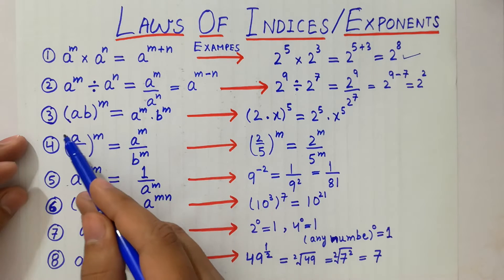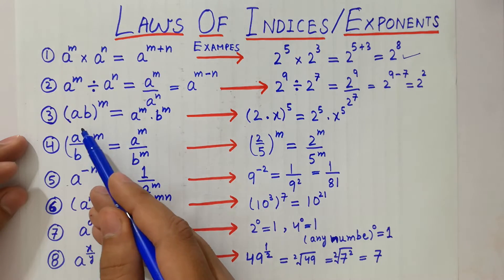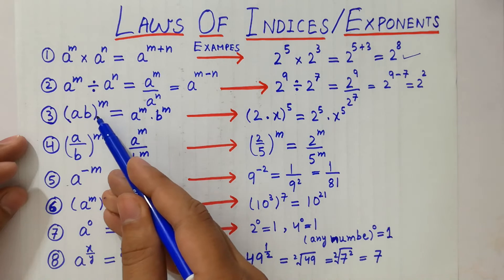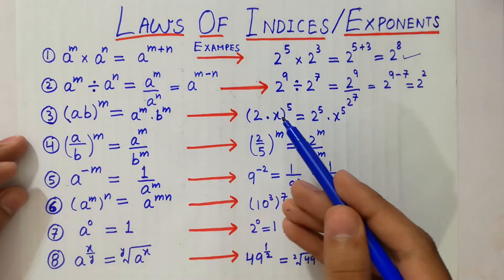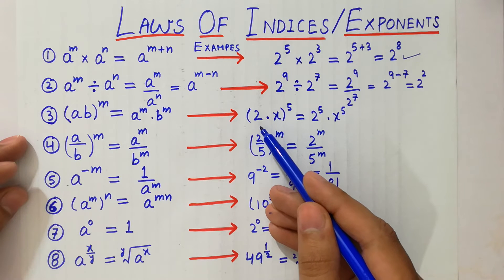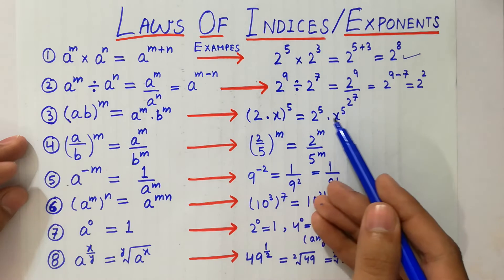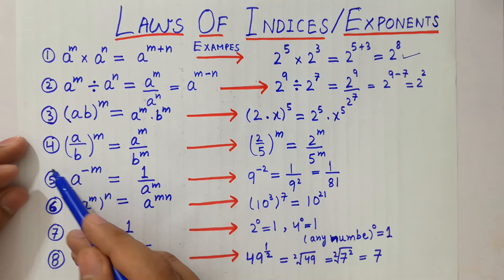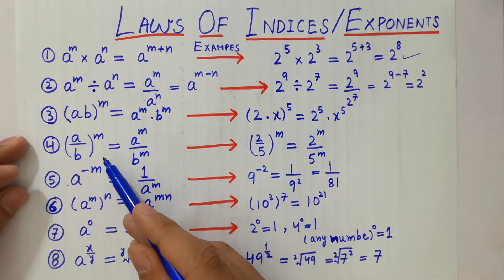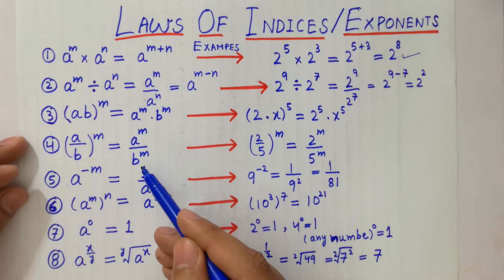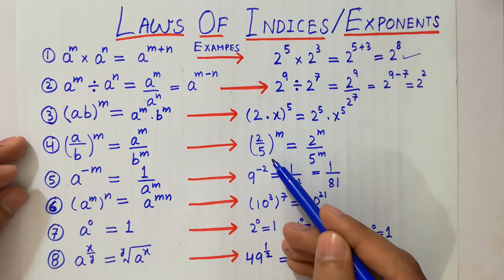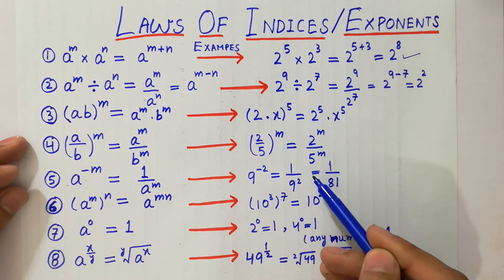Third law: a bracket a b whole raised to power m is equal to a raised to power m times b raised to power m. Similarly, a raised to power m divided by b raised to power m equals the fraction a over b whole raised to power m. For example, 2 over 5 whole raised to power m is equal to 2 raised to power m divided by 5 raised to power m.